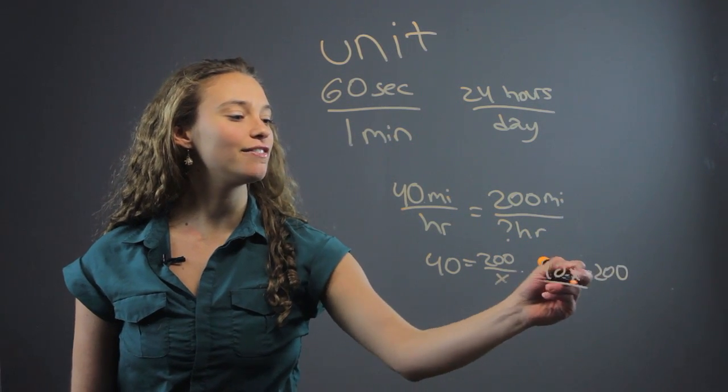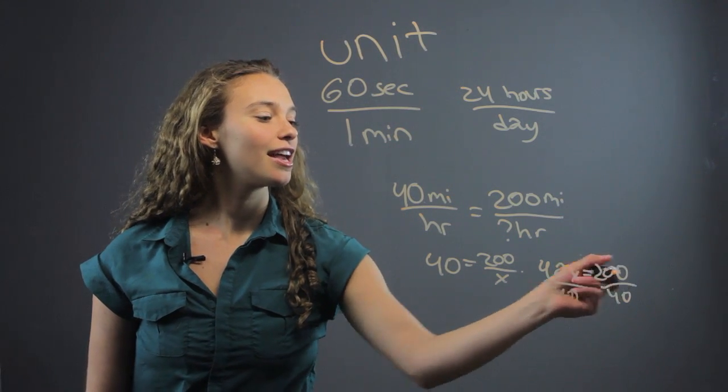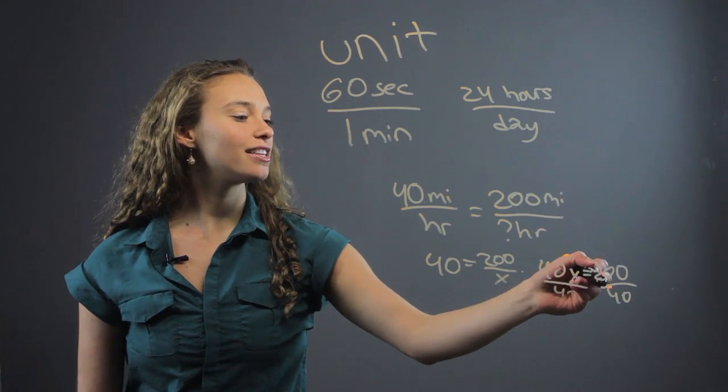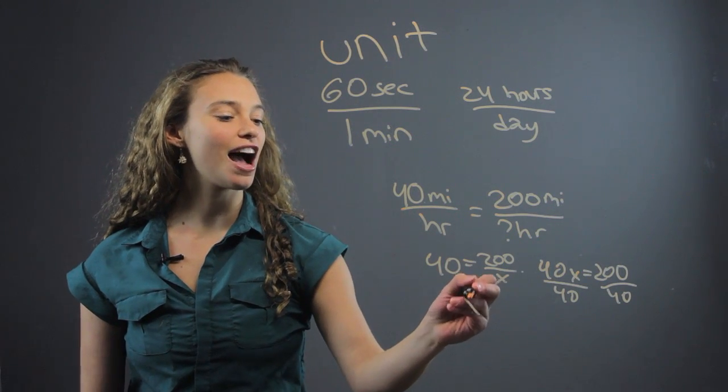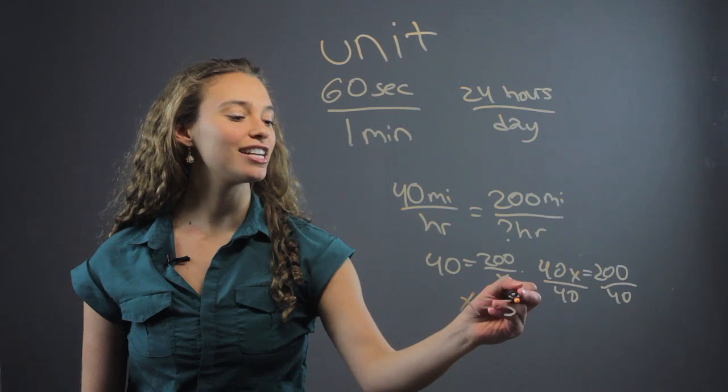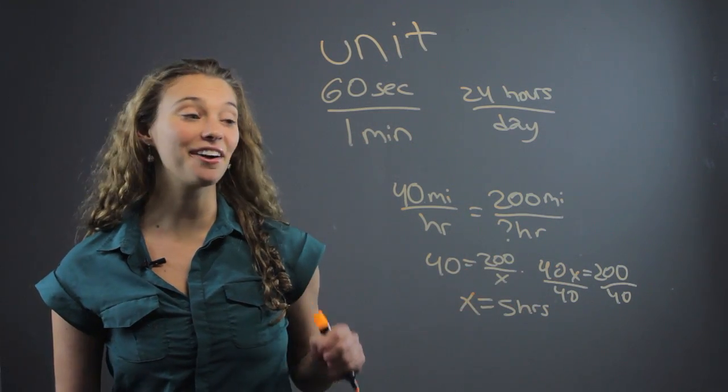And then we just divide both sides by 40 to get x. And I believe we end up with x goes into it five times. So that's going to be five hours. It's going to take just five hours to get to wherever she's trying to go.